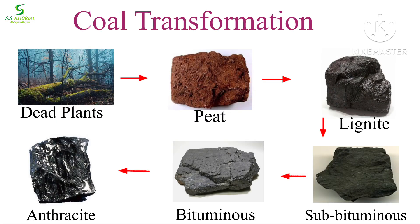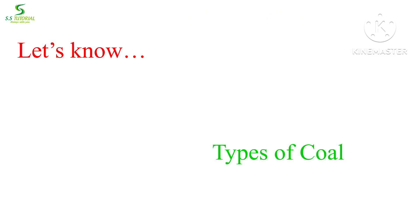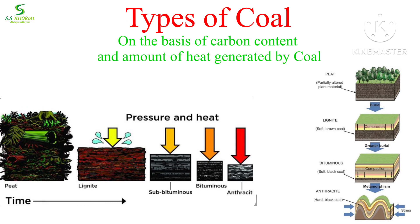The process of coal formation takes millions of years. In the first stage, dead plants turn into peat, then peat turns into lignite, then lignite turns into sub-bituminous, then sub-bituminous turns into bituminous, and in the final stage bituminous turns into anthracite through high pressure and high temperature. Coal can be classified into five types on the basis of the carbon content and the amount of heat the coal can generate.